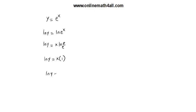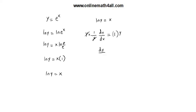So we get ln y is equal to x times 1, which gives ln y is equal to x. Now finding the derivative with respect to x: on the left side, the derivative of ln y gives 1 over y, and by chain rule we get dy over dx. On the right side, the derivative of x with respect to x is just 1. Multiplying both sides by y, the y cancels on the left side and we get dy over dx equal to y. Since y is equal to e to the power x, we replace y and get dy over dx is equal to e to the power x. So the derivative of e to the power x is just e to the power x.